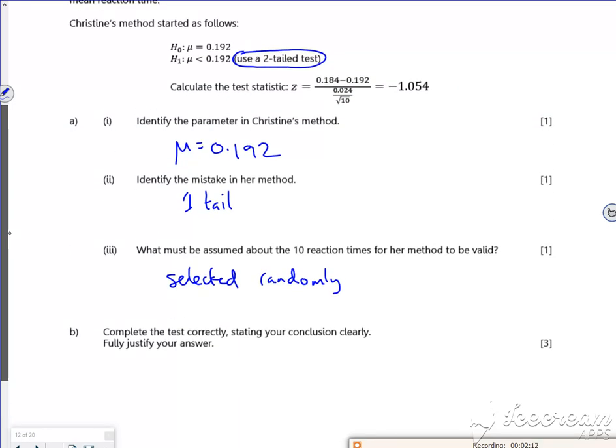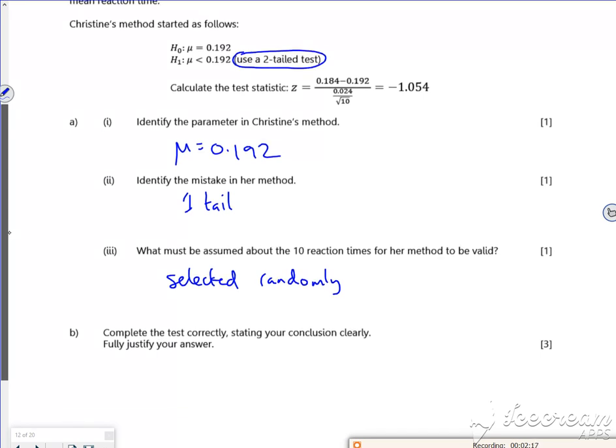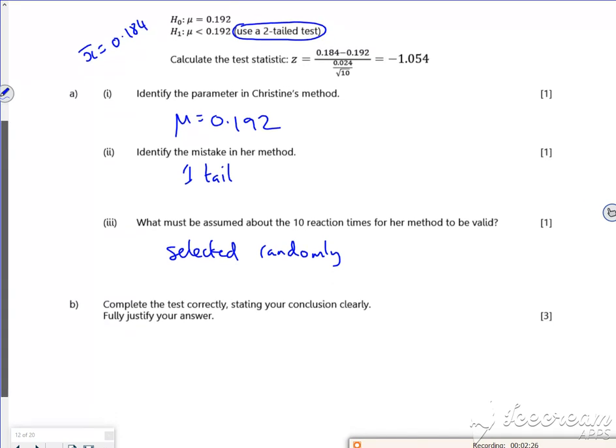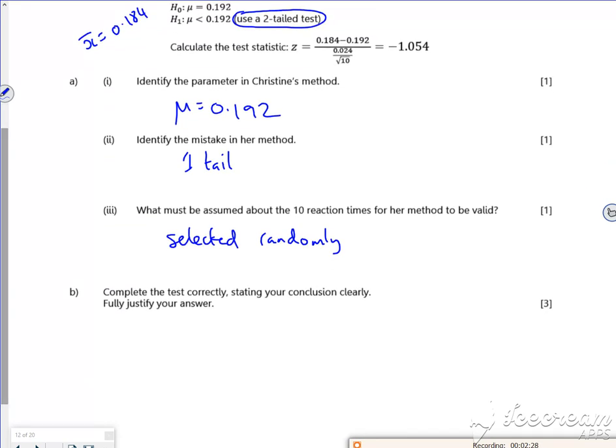Then it says complete the test correctly, stating your conclusion. Right, so they've done it with a Z of minus 1.05, haven't they? So we could do it with a 0.184 because we've not really stated here that X bar is 0.184. So what I'll do is I'll pause a little bit. I'll put in the test stats. So it's X bar is less than 0.184.